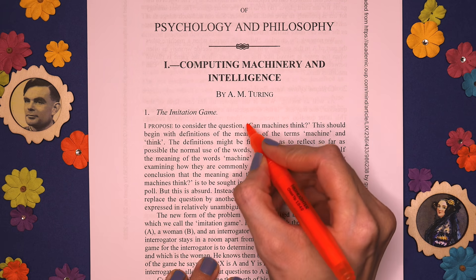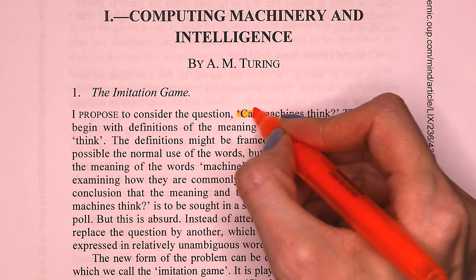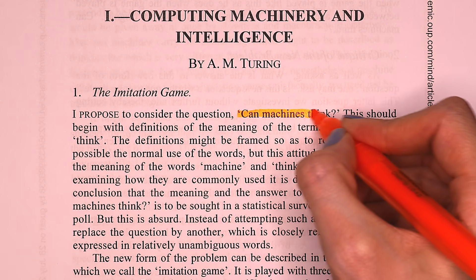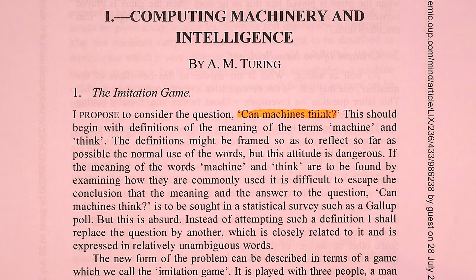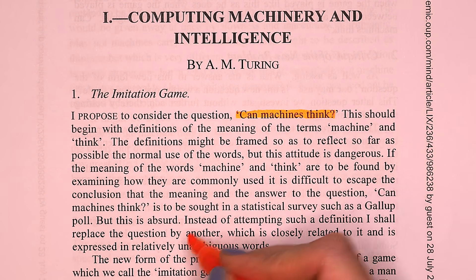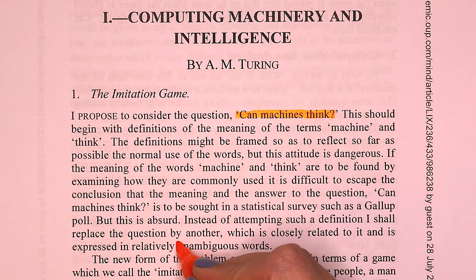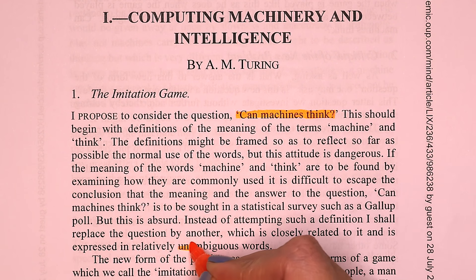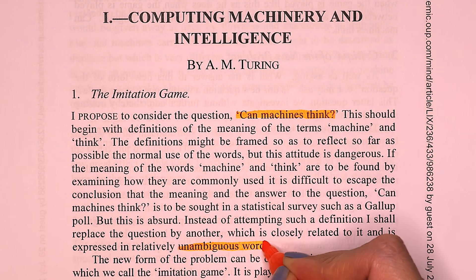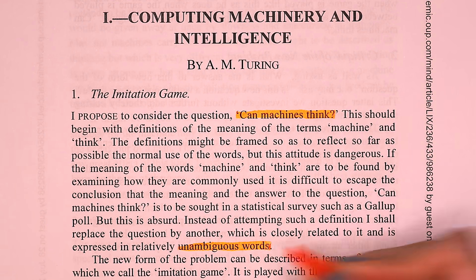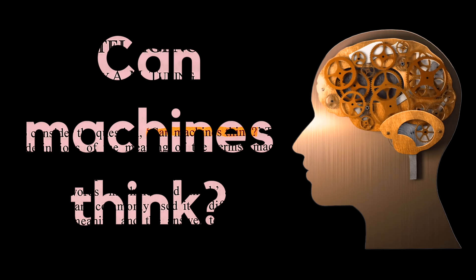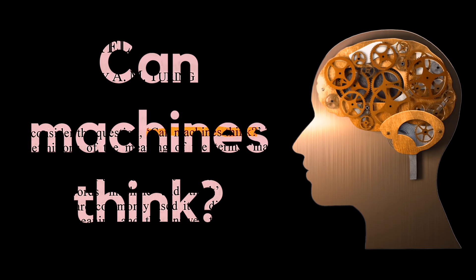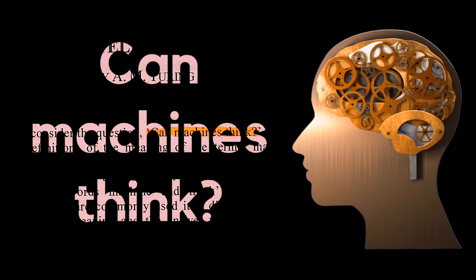Turing starts off by considering the question 'can machines think?' but figures that question is way too ambiguous. The words 'machine' and 'think' are too ambiguous to define, and instead he comes up with a game — the imitation game — which he thinks will be equivalent to asking if machines can think.